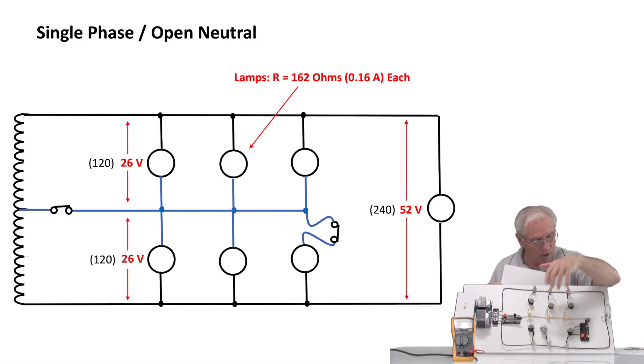You can see I've got six lamps connected here to the neutral, one that's connected across the 220 equivalent, a switch in the neutral, and one light I can switch out also.